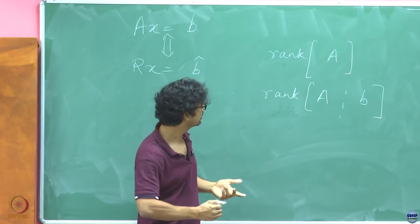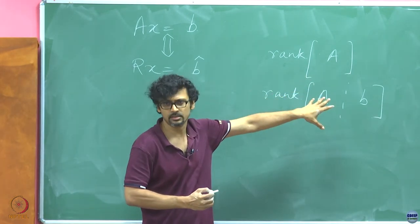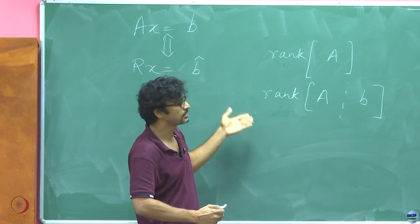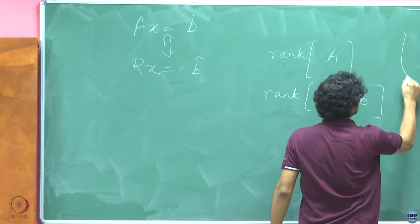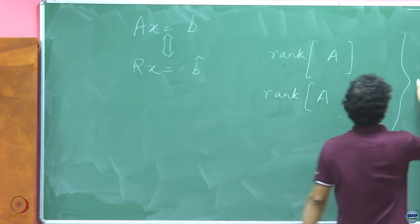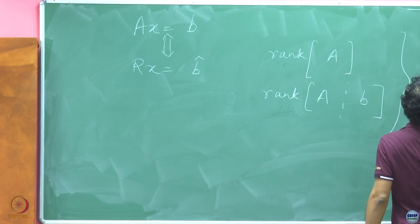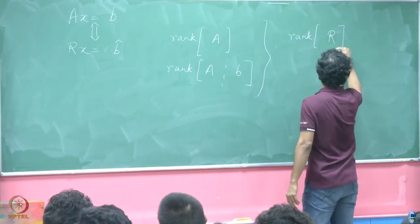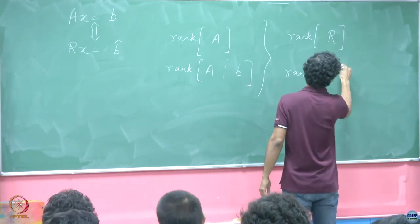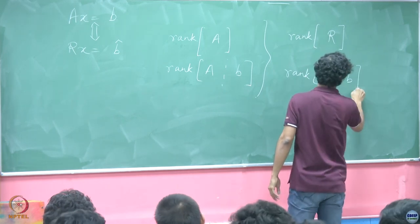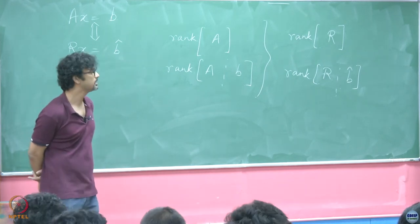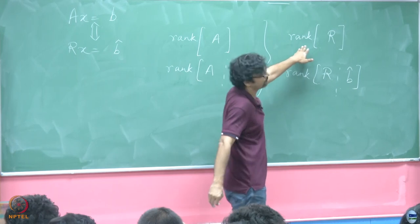But let us try to demystify this now, based on what we understand. Instead of looking at this, we have already convinced ourselves that it suffices to look at the equivalent condition on the equivalent system of equations. So let us try to reformulate this condition in terms of the row reduced echelon form versions R and B hat.